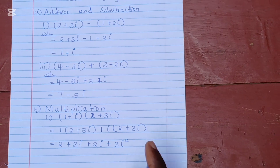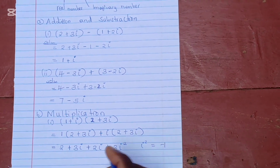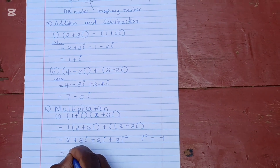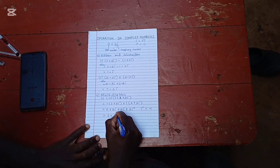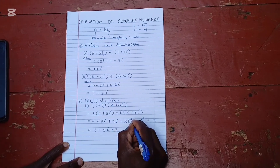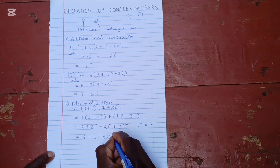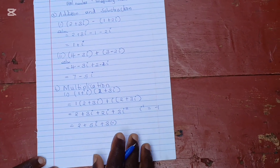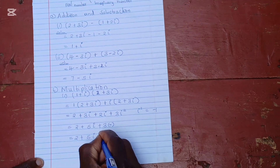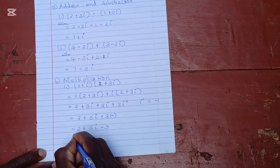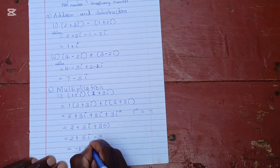Now, recall that i squared is the same as negative 1. We take 2 plus 3i plus 2i, which adds to give 2 plus 5i, plus 3 times i squared. Substituting i squared with negative 1 gives 2 plus 5i plus 3 times negative 1, which is 2 plus 5i minus 3, giving a final answer of negative 1 plus 5i.